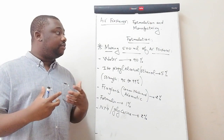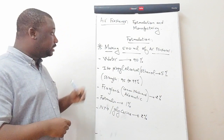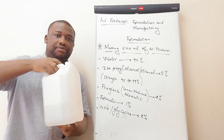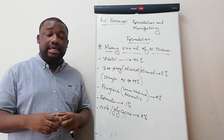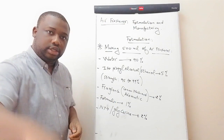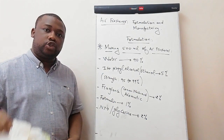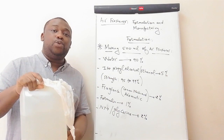Before getting to the manufacturing process, I will present each and every ingredient to you. The first ingredient is water — it's the most common ingredient. The next one is ethanol, which I have here with me. Then the next ingredient is your fragrance — I'm going to make use of lemon fresh and aromatic perfume. This is the lemon fresh here, and this is the aromatic perfume. Then the next ingredient is formalin — I also have formalin here with me.